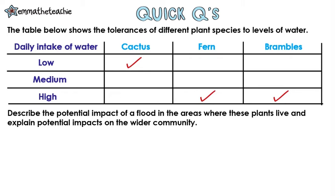The table below shows the tolerances of different plant species to levels of water. We've got three different species — cactus, fern, and brambles — and their daily intake of water is low, medium, or high. The question asks: describe the potential impact of a flood in the areas where these plants live and explain potential impacts on the wider community. Pause the video and have a go at answering it before pressing play.